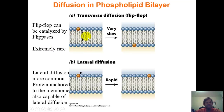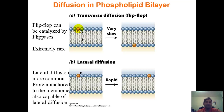You have to imagine the bilayer is an array all over the spherical cell. In order for one phospholipid to go from the outer leaflet to the inner leaflet, that head group has to traverse a hydrophobic interior — the hydrophobic interface. That is thermodynamically not conceivable. So this idea of transverse diffusion, otherwise known as flip-flop, is very, very rare, if it happens at all.